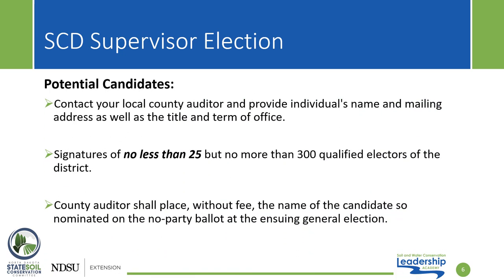The process to become a candidate requires a visit to the local county auditor's office. The individual running for a supervisory position must provide their name and address, as well as title and term of office. He or she will need signatures from at least 25 qualified electors of the district, but no more than 300. Once these steps are completed, the county auditor will place, without fee, the name of the candidate on a no-party ballot for the upcoming general election.